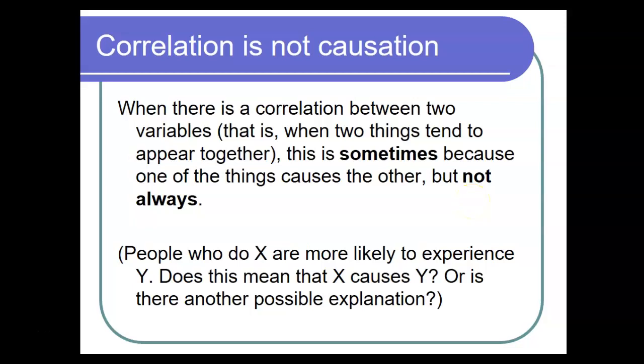We just went through an example where we saw that there did seem to be a correlation between the two variables we were studying. But now I have to give you the standard warning that correlation is not necessarily causation. Just because there's a correlation between two variables, sometimes that's because one of them is affecting or causing or influencing the other one — but not always. There might be another explanation for why the two things tend to appear together.